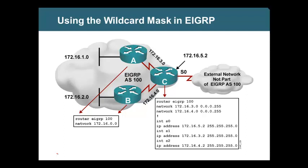Sivaram, please explain what you understand from this picture. The student says: this is EIGRP 100, the process ID is 100. The instructor corrects: it is not a process ID — it is the autonomous system number. In OSPF, in the same place we put a number and call it a process ID, but in EIGRP it is the autonomous system number. All routers A, B, and C are in the same autonomous system. Router C is connected to an external network.